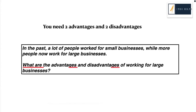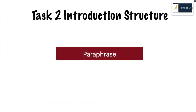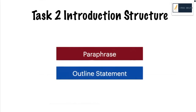As mentioned, you will need two advantages and two disadvantages. The structure for all task two introductions is the same: we start with a paraphrase and then we write an outline statement. You can think of the outline statement a bit like an index for your essay — this is where you are going to mention the ideas you will talk about in the rest of the essay.